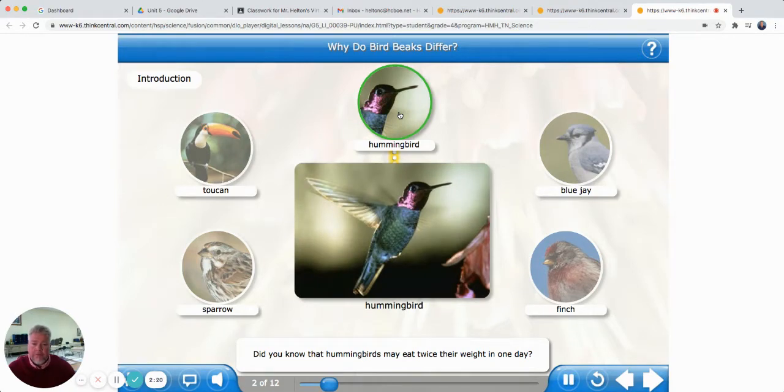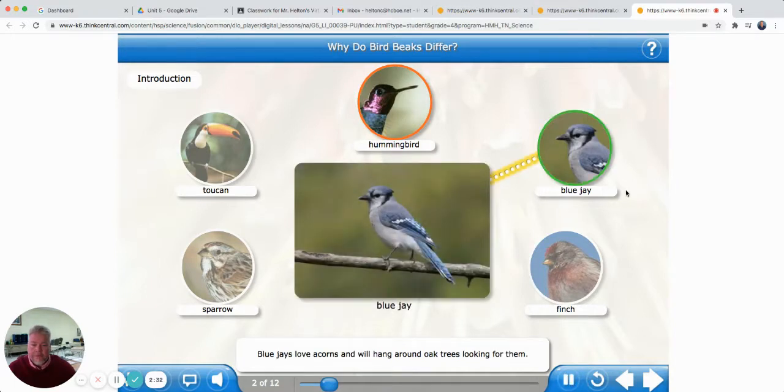Did you know that hummingbirds may eat twice their weight in one day? Hummingbirds like the sugar in flower nectar and tree sap. Blue jays love acorns and will hang around oak trees looking for them. They prefer tray feeders and will come for suet, a fat, peanuts, or sunflower seeds. They will chase other birds away from your feeder. So look at how the beaks are different. This little hummingbird, he's got this long skinny beak to get down inside of the flower to get the nectar. And the blue jay has this shorter beak. He's going to crush acorns and other little nuts like it said that he ate. Let's hear about a finch.